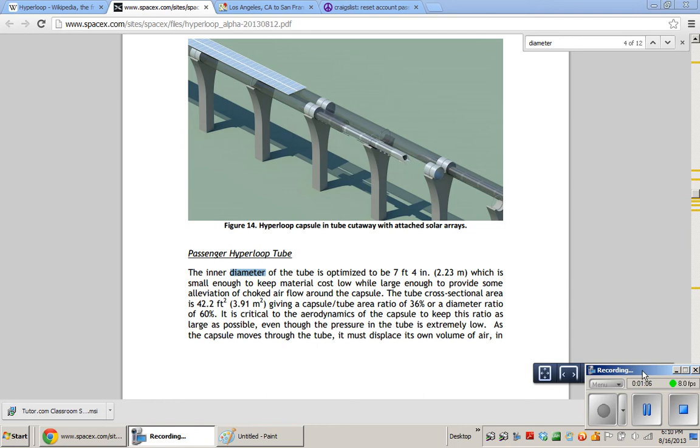To do this, first we have to figure out the length of the tube and also the inner diameter of the tube to figure out how much surface area there's going to be. According to Mr. Musk's proposal, the inner diameter of the tube is going to be 7 feet 4 inches or 2.23 meters. And the length is going to be, let me look that up.